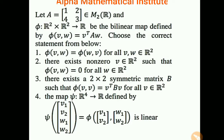First statement: φ(V, W) equals φ(W, V) for all V, W belonging to R2. Second statement: there exists a non-zero V in R2 such that φ(V, W) equals 0 for all W in R2. Third statement: there exists a 2 by 2 symmetric matrix B such that φ(V, V) equals V transpose BV for all V in R2. Fourth statement: the map ψ from R4 to R defined by ψ(V1, V2, W1, W2) equals φ((V1, V2), (W1, W2)) is linear.